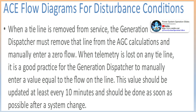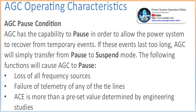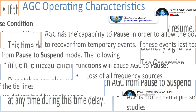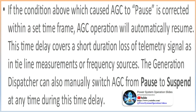Frequency bias factor B: it is important for the generation dispatcher to know where this setting is changed in the AGC system. If an operating area were to become isolated for a long period of time, the response effect of frequency bias would change, due to the smaller system that AGC is now trying to control. Having the frequency bias number set to the normal interconnected value will tend to cause larger frequency swings in the isolated operating area. The frequency bias setting should be reduced or set to zero to allow AGC to control more accurately while in an isolated state. Once the interconnection is re-established, the bias setting should be returned to its previous value.